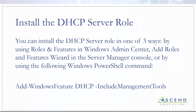Besides Server Manager, you can also install DHCP using Windows Admin Center or through PowerShell. In PowerShell, you would type "Add-WindowsFeature DHCP." Now, this is an interesting point — server roles and server features are two different things, but when the PowerShell cmdlet was created, they didn't separate roles and features; they call everything features. So no matter what server role or feature you're installing, it always starts with Add-WindowsFeature. That's a sidebar from DHCP, but something you'll need to know.